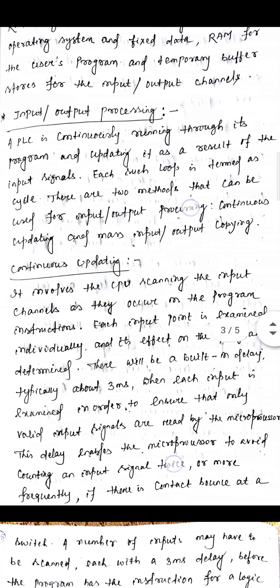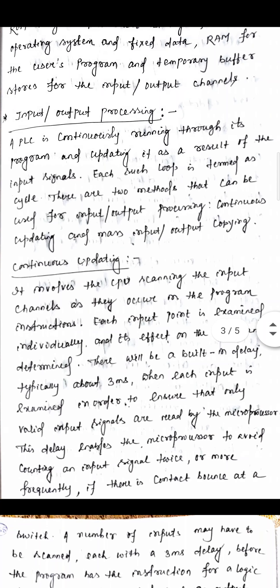Now our topic is input and output processing. A PLC continuously runs through its program and updates it as a result of the input signals. Each such loop is termed a cycle. There are two methods that can be used for input or output processing: one is continuous updating, and the second is mass input or output copying.